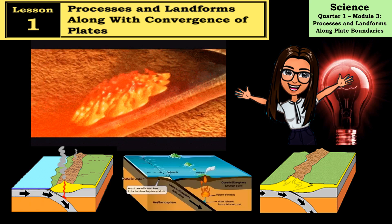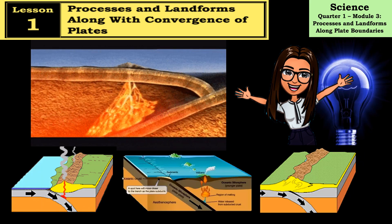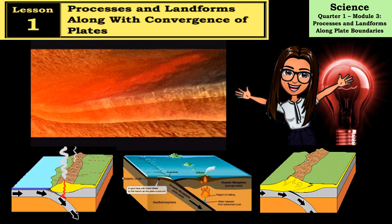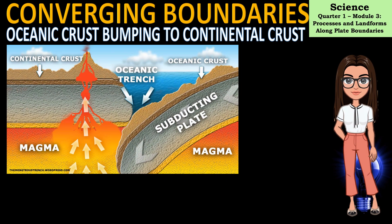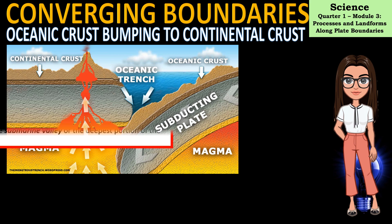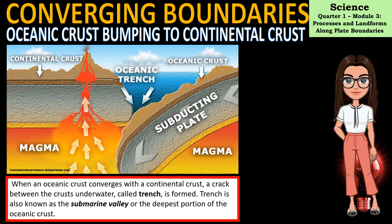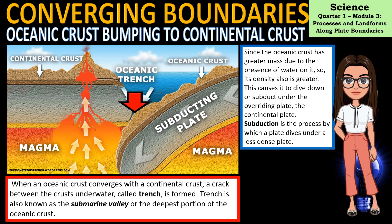The first lesson is about the processes and landforms along the convergence of plates. Convergent boundaries happen when plates move toward each other and have three types. The first type is oceanic crust converging with continental crust. When this occurs, a crack underwater called a trench is formed — also known as the submarine valley or the deepest portion of the oceanic floor. Since the oceanic crust has greater density, it dives down or subducts under the overriding continental plate.